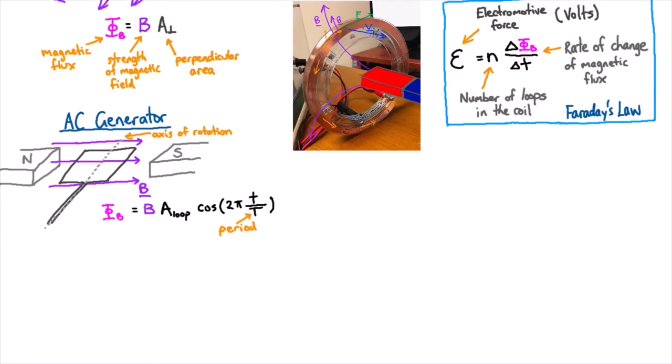If we look at the flux as a function of time, we start at time equals 0. Cos of 0 is 1. And so we start at the maximum of the magnetic field times the total area of the loop. And then cos just goes like this.